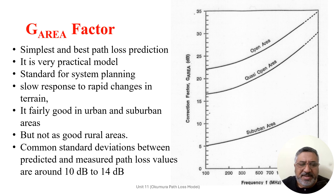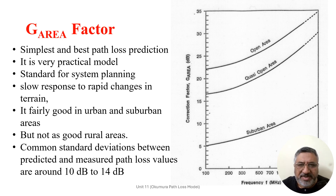The Okumura model is considered among the simplest and best in terms of accuracy in path loss prediction for mature cellular and land mobile systems in cluttered environments. It is very practical and has become a standard for system planning in modern land mobile radio systems not only in Japan but all over the world. A major advantage — and sometimes disadvantage — is that it responds slowly to rapid changes in terrain. The model performs fairly well in urban and suburban areas but not as well in rural areas. Common standard deviation between predicted and measured path loss values is around 10 dB to 40 dB.